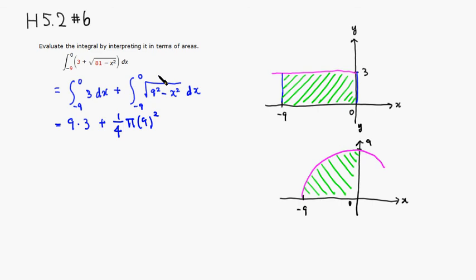So we know that this is 1 quarter of π r squared. r is 9, so this is going to be 27 plus 9 squared, 81, π over 4.